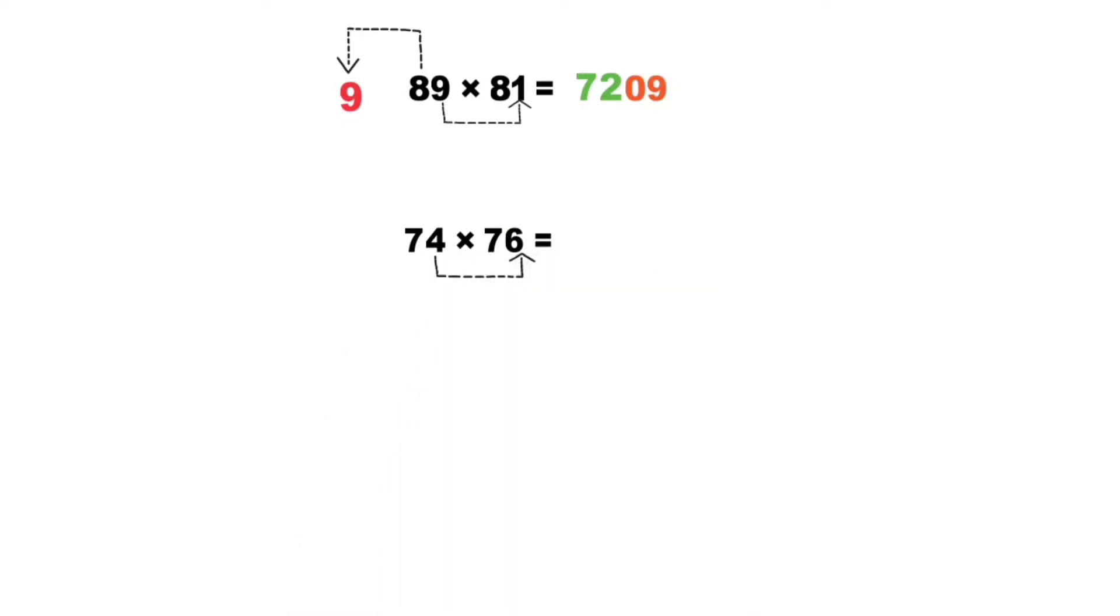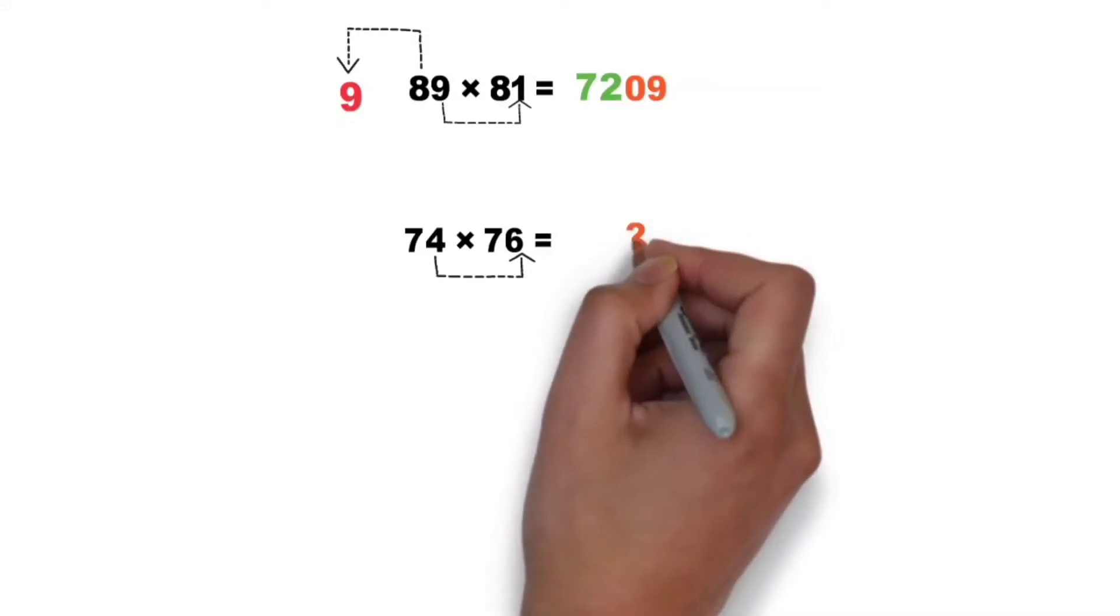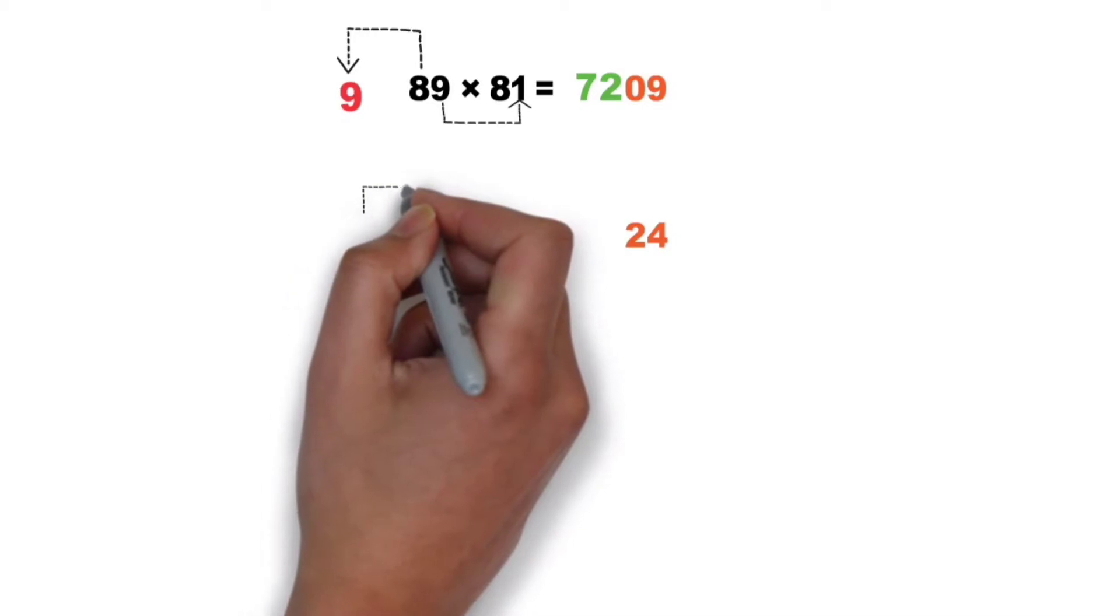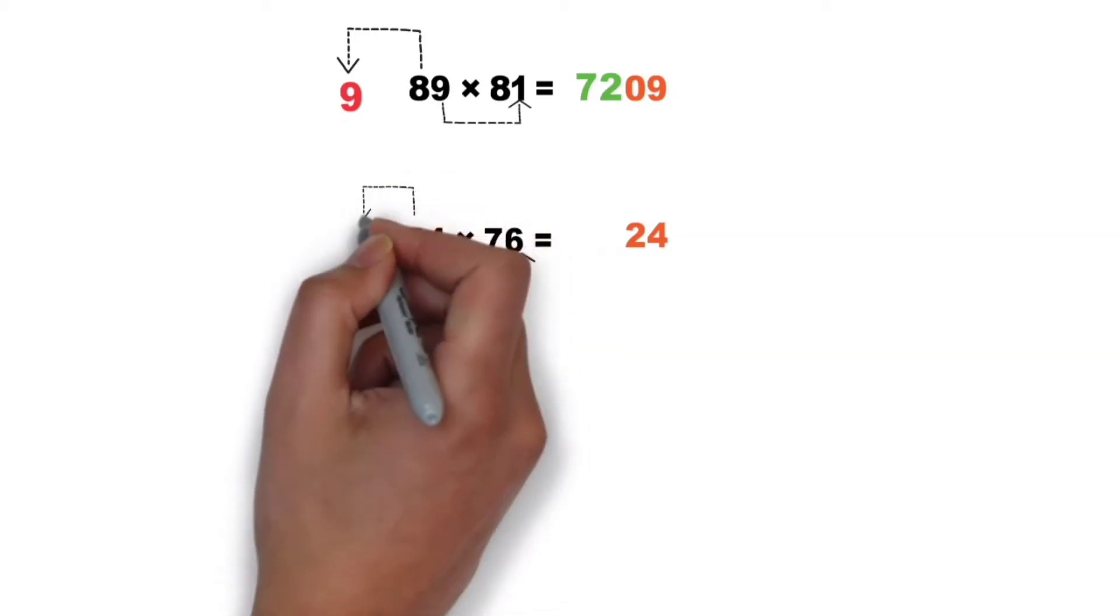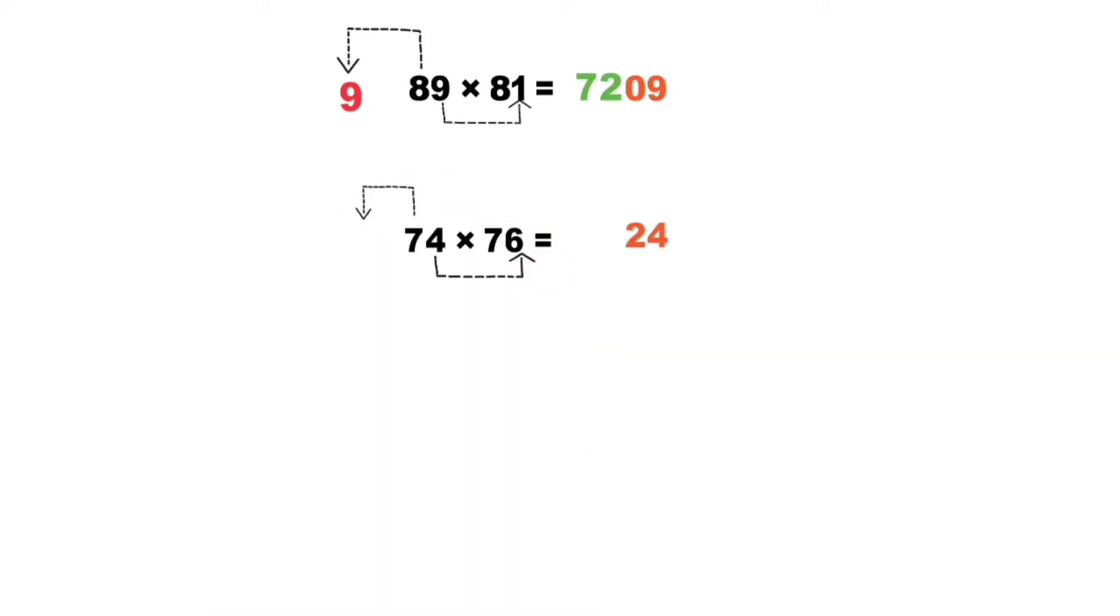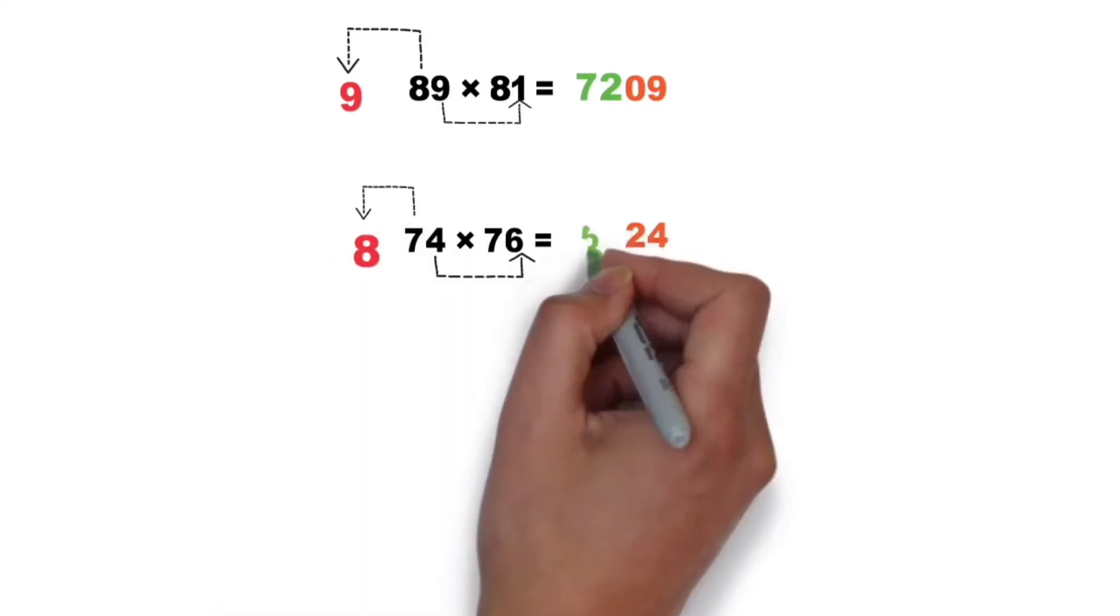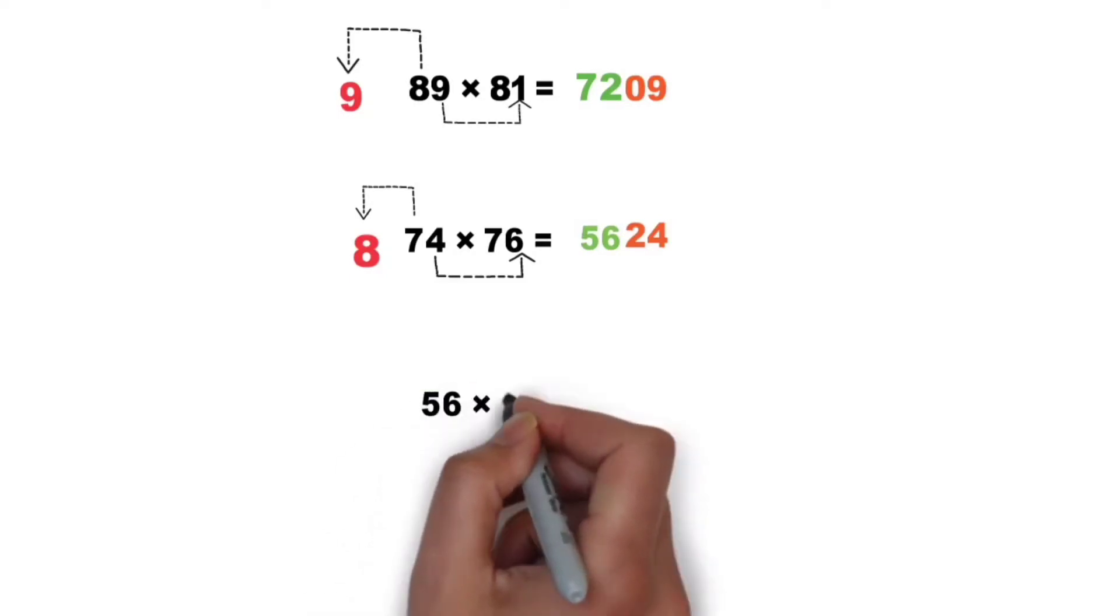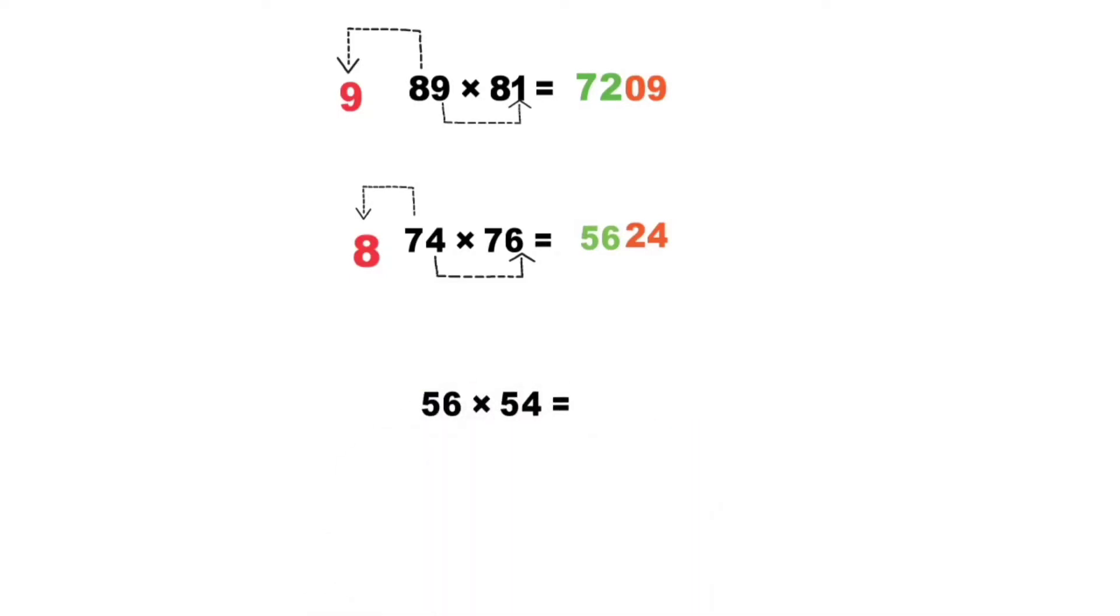For this multiplication, firstly 4 times 6, this is 24. Now 7, next number is 8, so 8 times 7 equal to 56. So answer is 5624. Next calculation also quite similar.